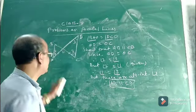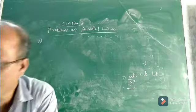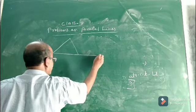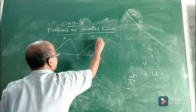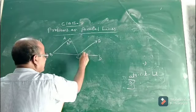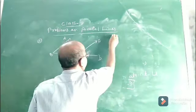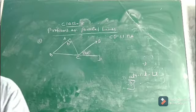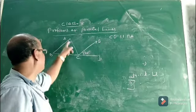Now let us discuss another problem. Suppose you are given a triangle ABC, and BC is produced up to D. CE is drawn such that this angle — angle ECD — is given as 40 degrees, and angle BAC is given as 75 degrees. We are also given that CE is parallel to BA.